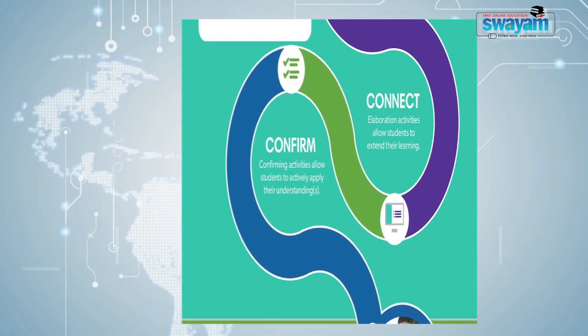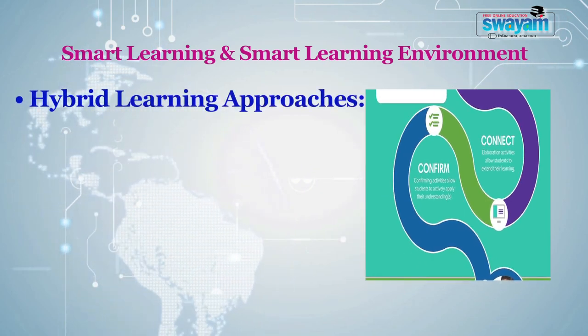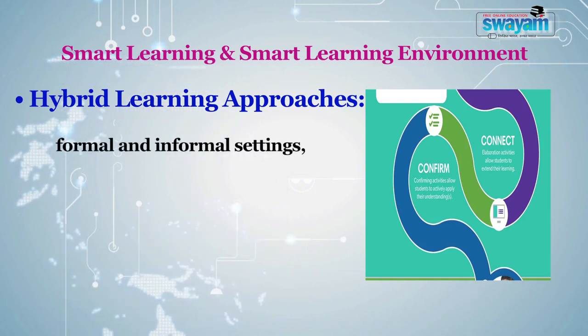Now let's learn what is smart learning and the smart learning environment. Smart learning is facilitated by IoT-based learning solutions that are seamlessly integrated into our working and learning environment. Smart learning environments are physical environments enriched with context-aware digital devices to improve and accelerate learning. Digital and context-specific components include sensors, actuators, etc.